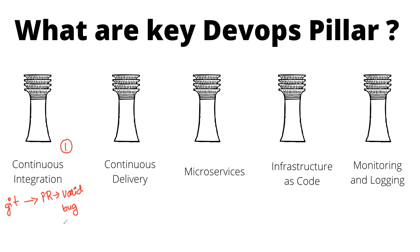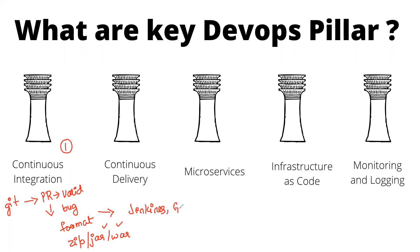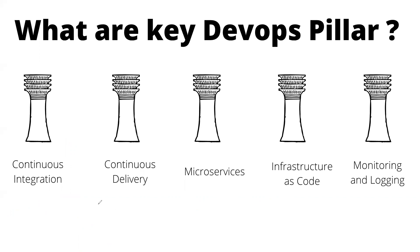There is no bug, it is of proper format, and we zip it or create a JAR file or WAR file. This is called continuous integration. Once this PR is merged, you'll create a JAR and verify it. What are the tools that can help here? Jenkins, GitLab, and GitHub Actions.